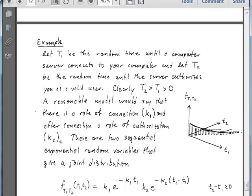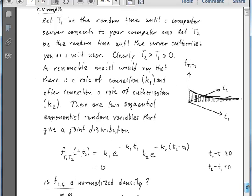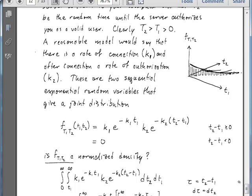A reasonable model would be to say that there's a rate of connection k1, and after connection, there's also a rate of authorization k2. So we're suggesting here that we have two sequential exponential random variables and that those are going to give us some joint distribution.